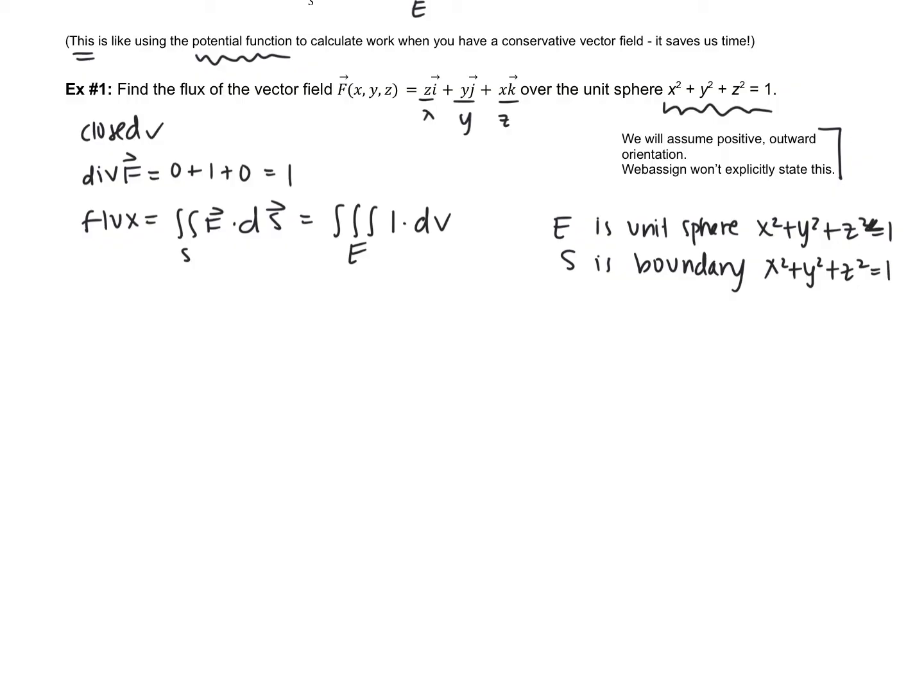Okay, so let's be smart here. If we're going to calculate this triple integral, we have two different options. Option number one, if we're just a computer and jumping in without really thinking, we can set up the bounds using spherical coordinates. Or, if we think for a minute before jumping right in, triple integral of 1 dv, we've seen before. What does that represent? Volume.